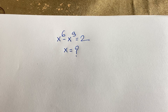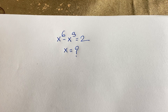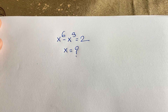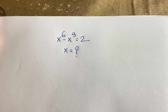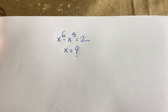Hello everyone. In this video we have solved this interesting math Olympiad question: x to the power 6 minus x to the power 3 is equal to 2. x is equal to what? How to solve this interesting math Olympiad question?